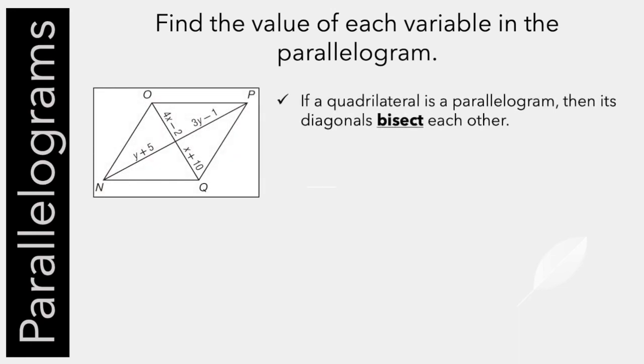Here's another one. We know that the diagonals bisect each other, cut each other in half, which means that for this one, we know that 4x minus 2 equals x plus 10. And again, we just have to solve for the variable, and we get x equals 4.